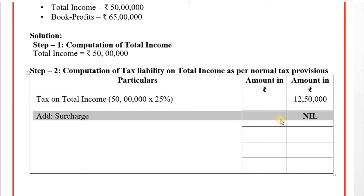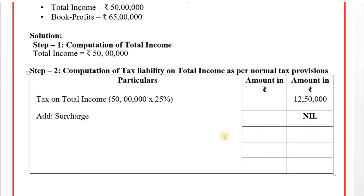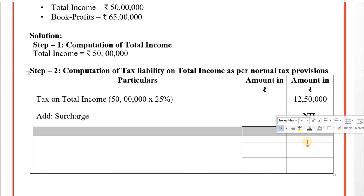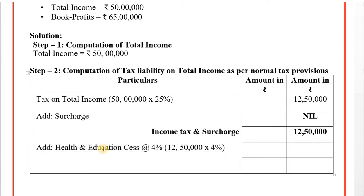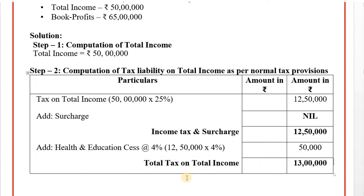Now total income tax: surcharge needs to be added. Total income is below 1 crore, so surcharge does not apply — nil. Income tax only, surcharge: 12 lakh 50 thousand. Health and education cess at 4 percent: 12 lakh 50 thousand into 4 percent — it comes to 50 thousand. Total tax liability as per normal provisions: 13 lakh.